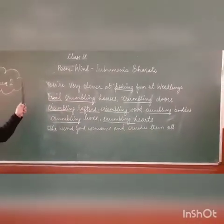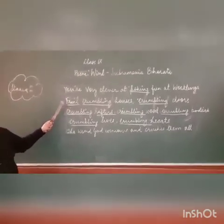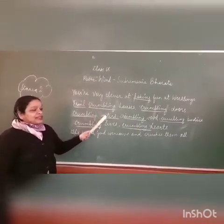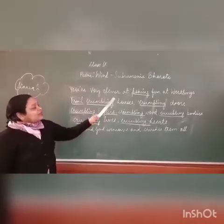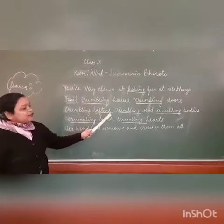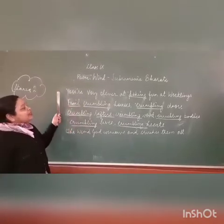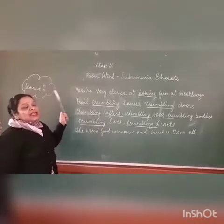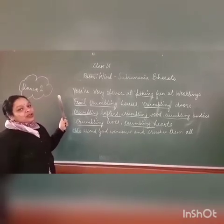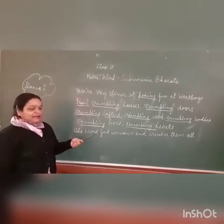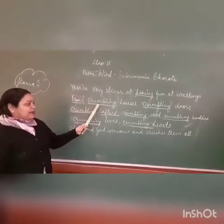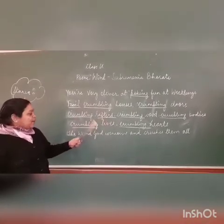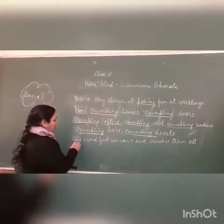Crumbling hearts means broken hearts. The real motive of the poet is to let us know that people who are weak, who are not able to face the adversities of life, fall victim to those adversities. This is why the word 'crumbling,' used as a repetition figure of speech, has been highlighted again and again. The entire poem — Wind by Subramanya Bharati — is a metaphor and symbolism, a symbol of adversities and challenges of life, and how we must stand tall to bear them or give up to life. Now look at the last line: 'the wind god' — this is personification.